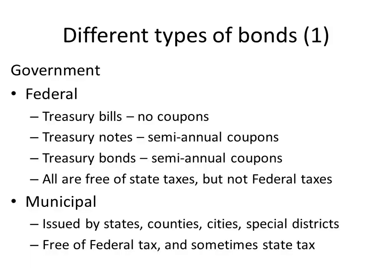Now let's talk about different types of bonds. Governments issue bonds. In the United States we have basically two types: ones issued by the federal government, and ones issued by state, county, city, and local entities. Federal debt — the debt of the U.S. Treasury — falls into three categories: treasury bills, which are very short term and have no coupons (one year or less); treasury notes, which are between 1 and 10 years with semi-annual coupons; and treasury bonds, which are greater than 10 years, usually up to 30 years, and also have semi-annual coupons.